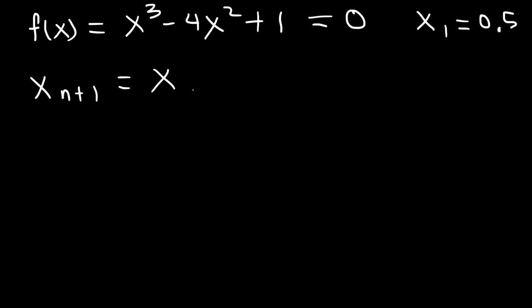So x sub n plus 1 equals x sub n minus f of x sub n divided by f prime of x sub n. So using the first 0.5, this equation will help us to get a more accurate zero, or a more accurate solution to the equation.